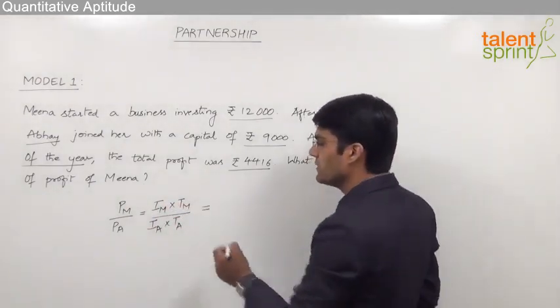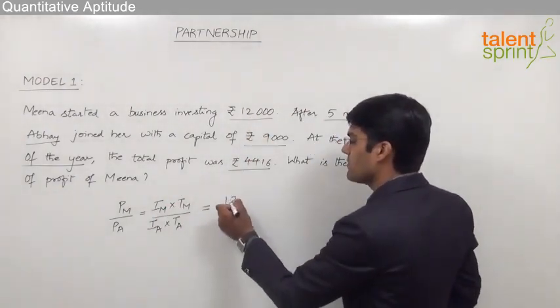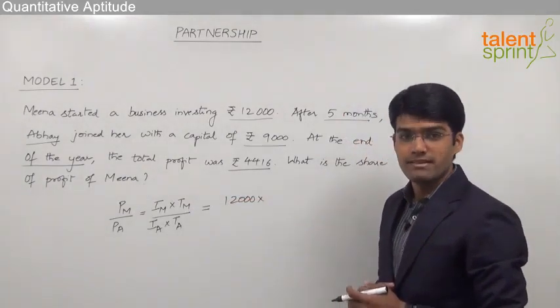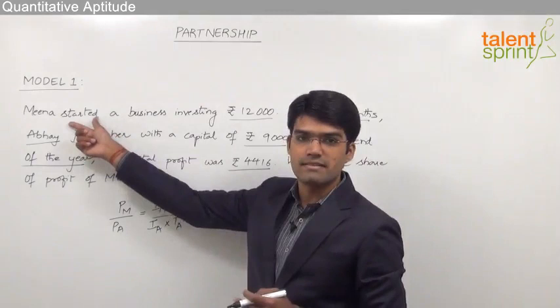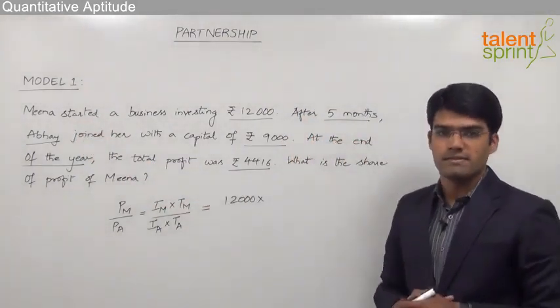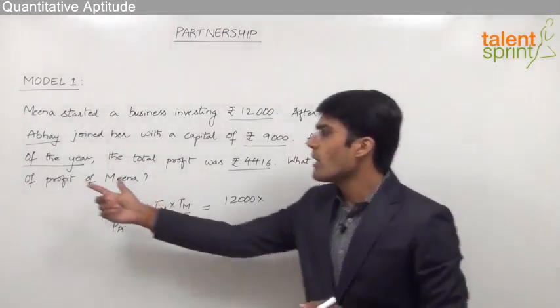By substituting the given values, we know that investment made by Meena is 12,000. So, 12,000 into the time of Meena's investment is 12 months because Meena has started the business and at no point it is mentioned about Meena leaving the business. Very clearly Meena was there in the business for the whole period of one year.